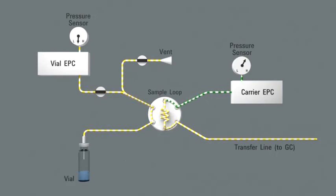The Headspace gas is injected into the GC, while the Headspace vial is safely depressurized, and the flow path readied for the next sample.